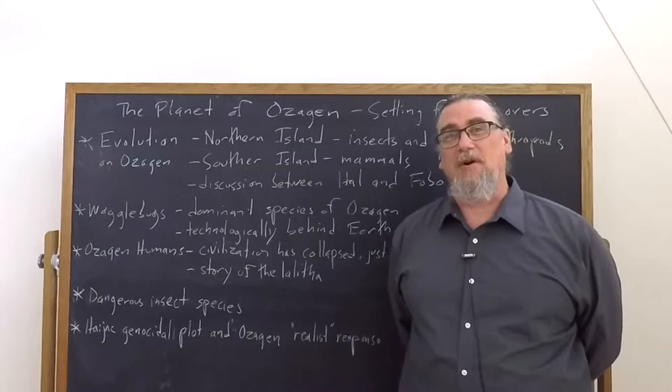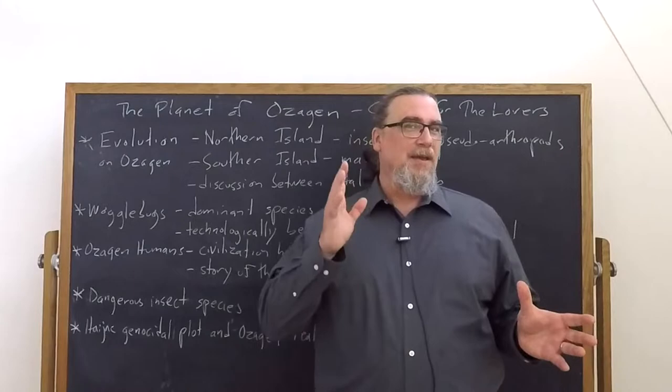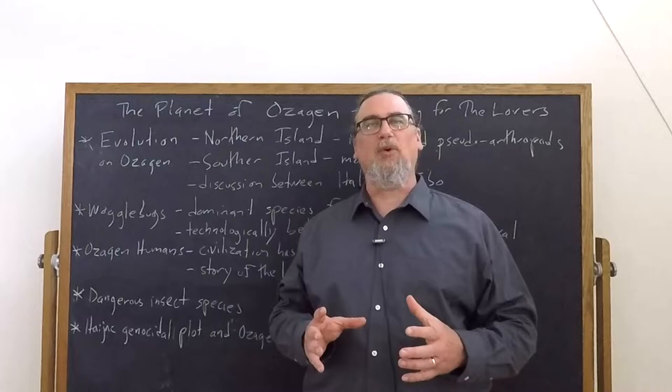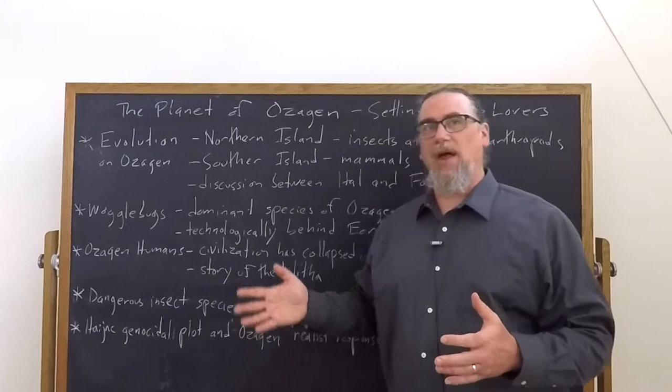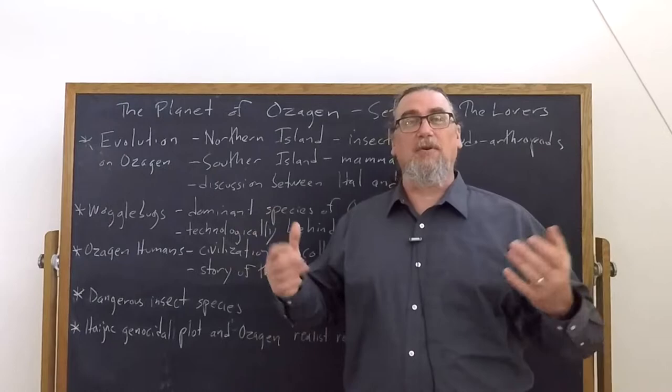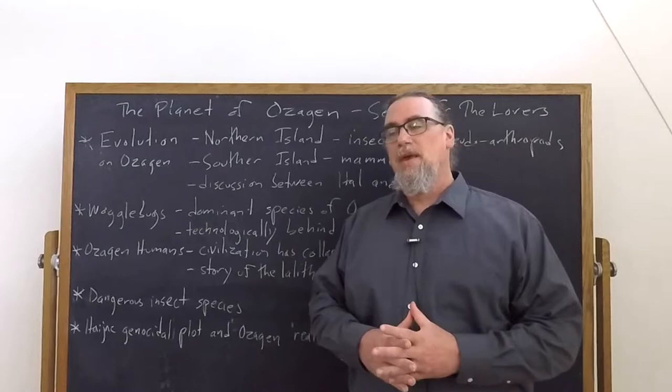Although there are a few chapters early on in Philip Jose Farmer's novella The Lovers that are set either on earth or in transit in space, most of the chapters, most of the text, most of the action, most of the character development, and certainly the resolution of the story are taking place on the planet of Ozagain, including the interactions between the lovers that furnishes the title of the story, Jeanette and Hal.